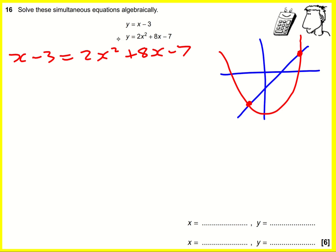Now I want the 2x squared to remain positive, so I'm going to minus the x and I'm going to add 3, and then I'm going to switch it around so that the right hand side is on the left hand side. So it's going to become 2x squared plus 7x minus 4 equals 0.